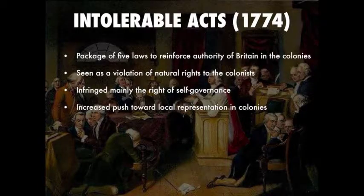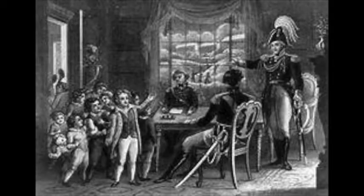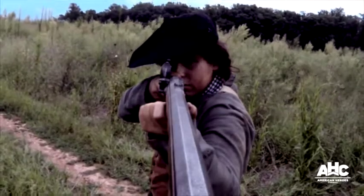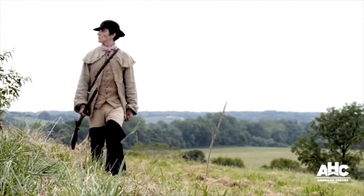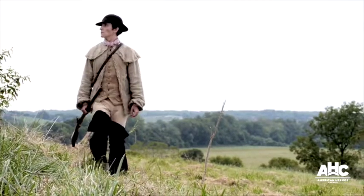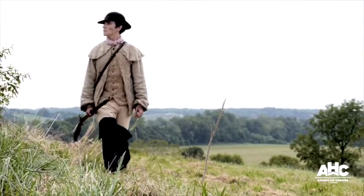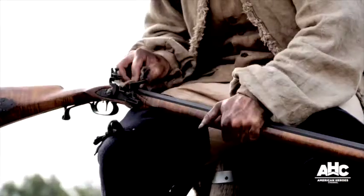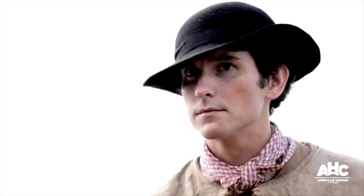On March 28th, 1774, the British Parliament was outraged and passed a series of measures called the Intolerable Acts. These acts were created to maintain authority in Massachusetts after the Boston Tea Party. The Intolerable Acts were made up of five acts.